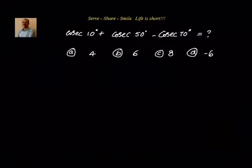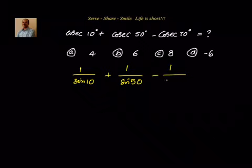Cosecant is really not interesting to me. What I really like is sine and cos because we know so many formulas related to sine and cos. So let me do one thing — straightforward, let me change that into sine by saying 1 by sine 10 plus 1 by sine 50 minus 1 by sine 70. These are degrees.